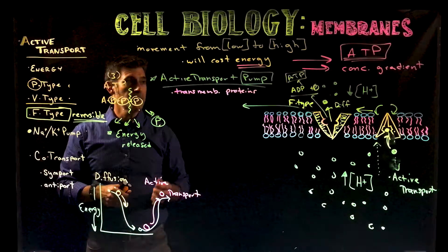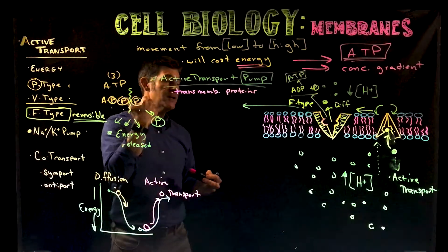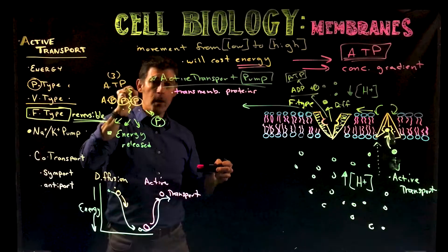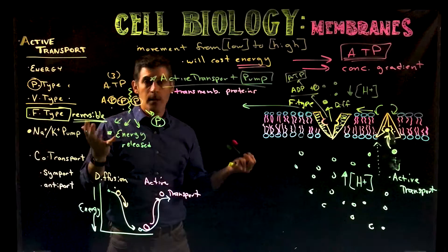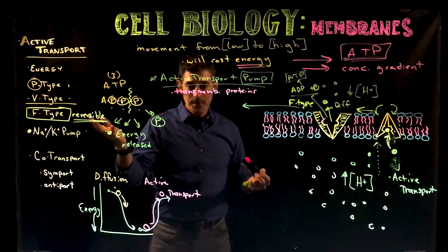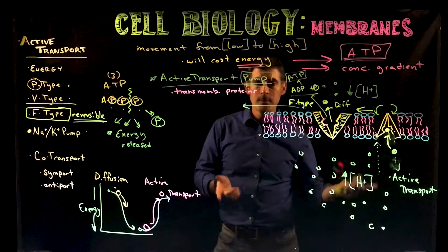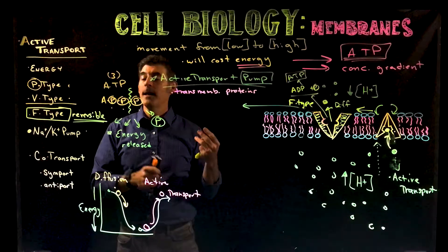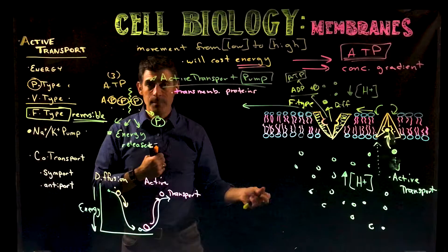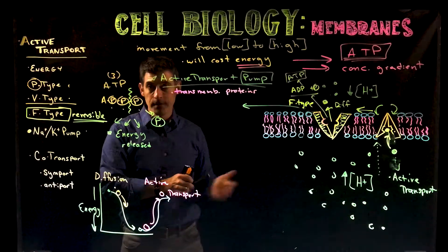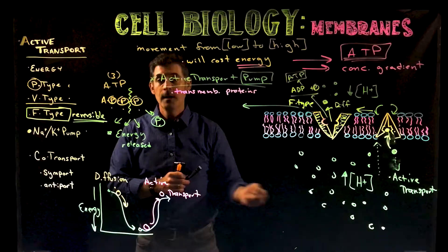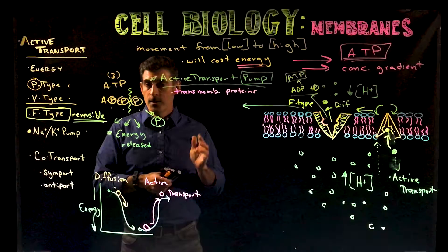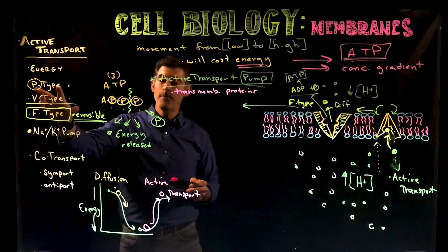So active transport is a process that requires energy, which can come from a number of sources, but right now we're focusing on ATP. You can use ATP and bind the phosphate, holding onto it — that's the P-type pump. You can use ATP and break it but not hold onto it — that's the V-type pump. You can use ATP for active transport but also allow the pump to be reversible to make ATP — that's the F-type pump. We've been using hydrogen ions as an example, but this could apply to glucose, amino acids, or anything else. Next we're going to look at the sodium-potassium pump, which is a type of P-type pump.